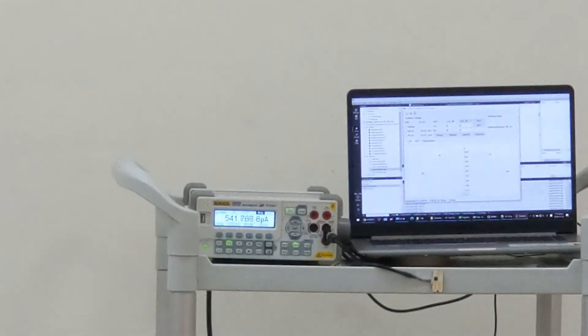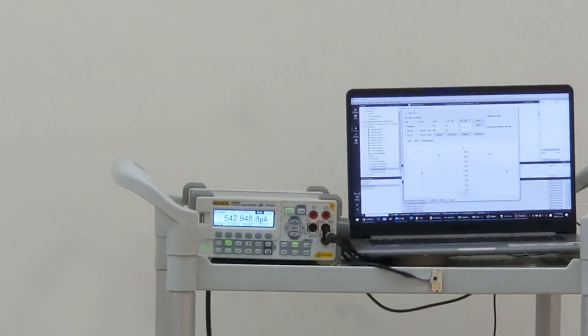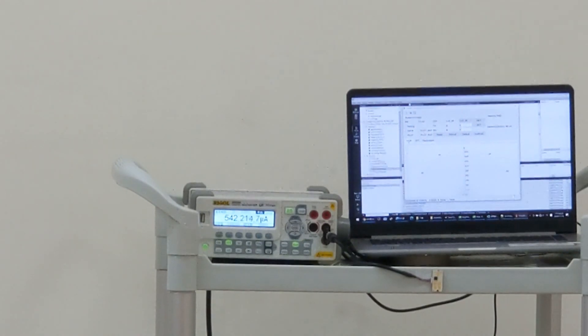The average current is 0.54 milliamps at 2.6 volts.